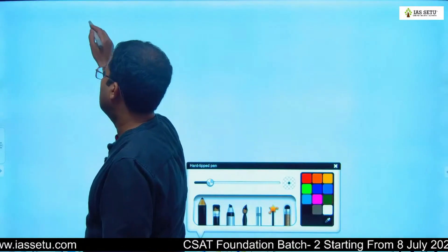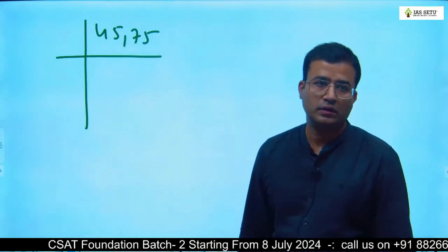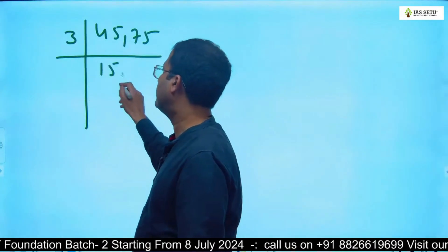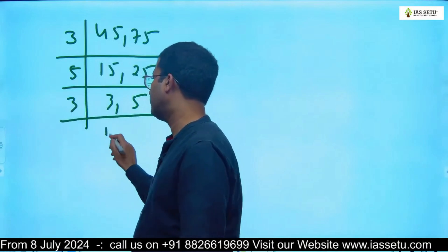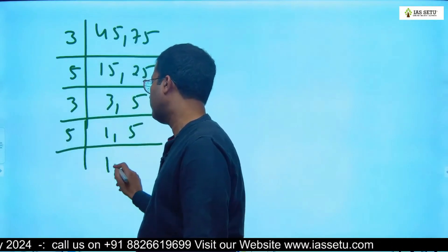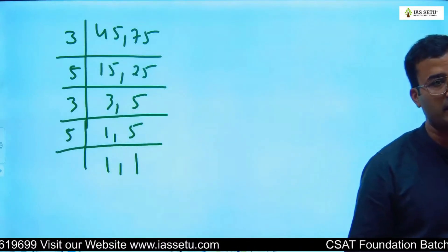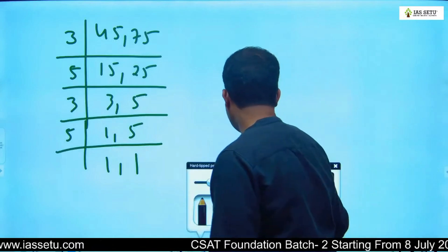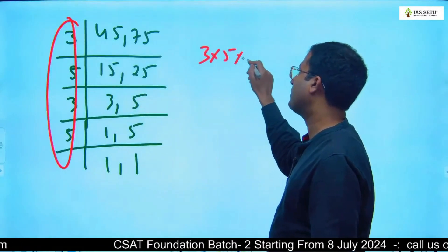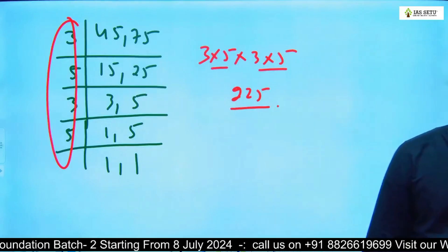I'll take one or two extra examples. I take like 45 and 75. I take 3 common: 15, 25. I take 5 common: 3, 5. Further, I take 3 common: 1, 5. I take 5 common: 1, 1. First preference is common factor out. The common factors come out and you have to reduce to 1. What is our LCM here? Multiply: 3 × 5 × 3 × 5 = 15 × 15 = 225. So LCM of 45 and 75 is 225.